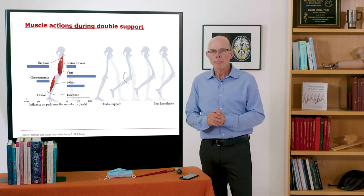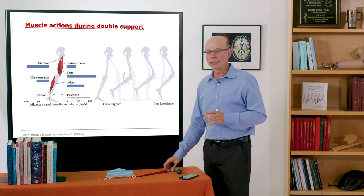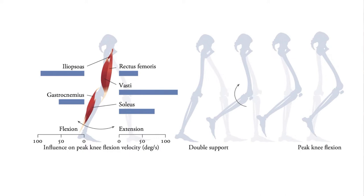The muscle actions during double support set up the swing phase. And it's really a modulation of muscles that stop the knee from flexing: rectus femoris, vastae and soleus. And muscles that promote the knee flexion during the double support phase: the iliopsoas and the gastrocnemius.